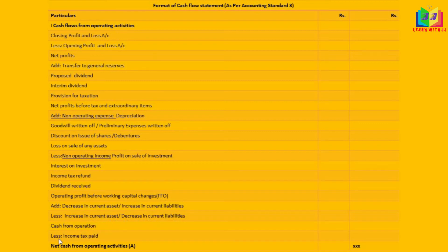From the cash from operation, we subtract the income tax paid — if it is given in the problem — to arrive at the net cash from operating activity. This is the first part of the cash flow statement as per Accounting Standard 3.